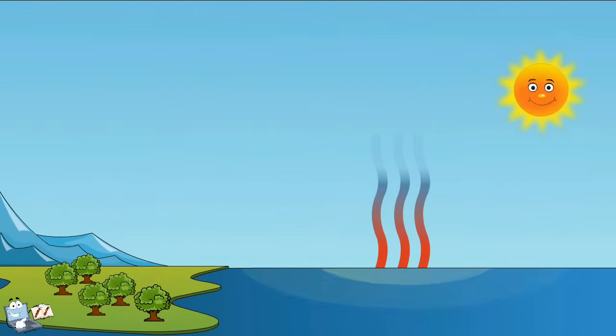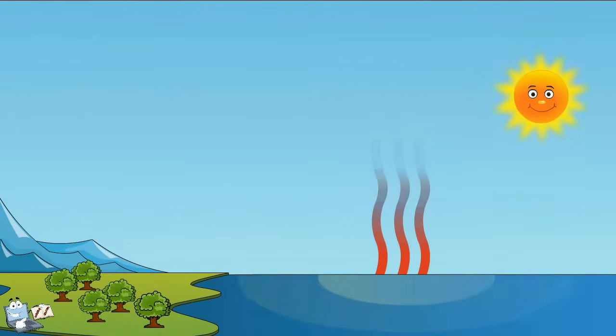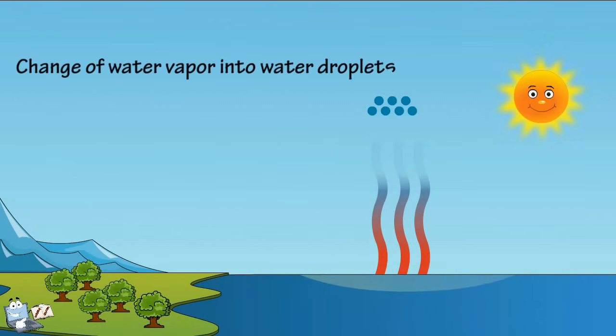In the sky, the water vapor cools and changes back into tiny water droplets. This change of water vapor into water droplets is called condensation, and it's the opposite of evaporation.